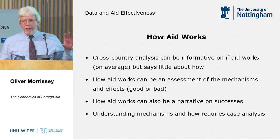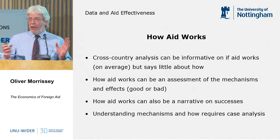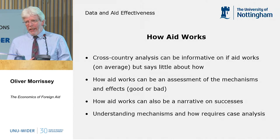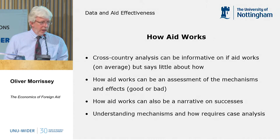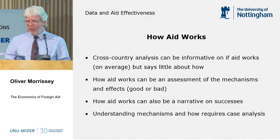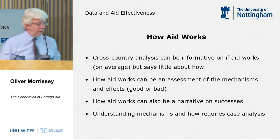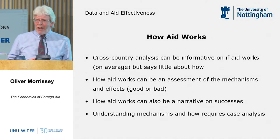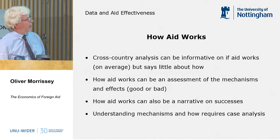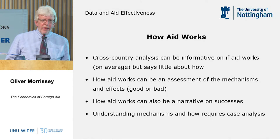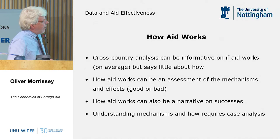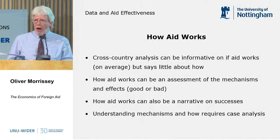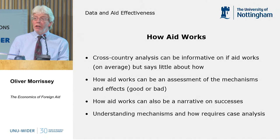One could characterize a lot of the cross-country regression work as asking 'does aid work?' — usually defining that question in a very precise way about whether a particular coefficient is positive and significant. That's informative, and it's troublesome, as Sam and Henrik in different ways have overviewed. But often it doesn't tell you very much about how aid works. I choose this phrase 'how aid works' because in English it's quite a nuanced phrase. On one hand, it can mean you're going to assess the mechanisms of the way in which aid has effects, whether they're good or bad.